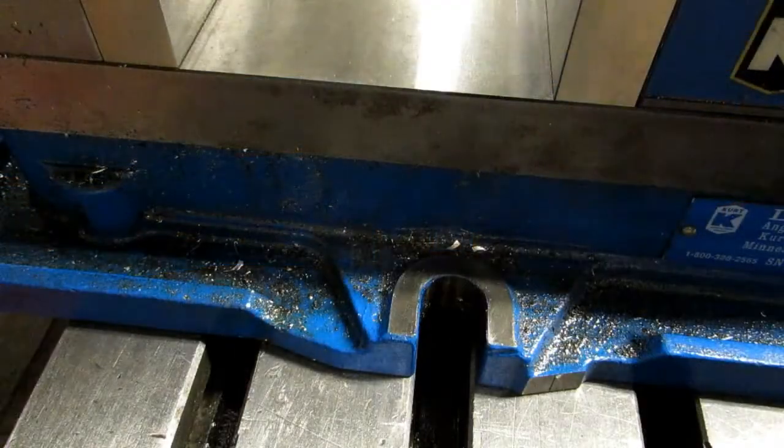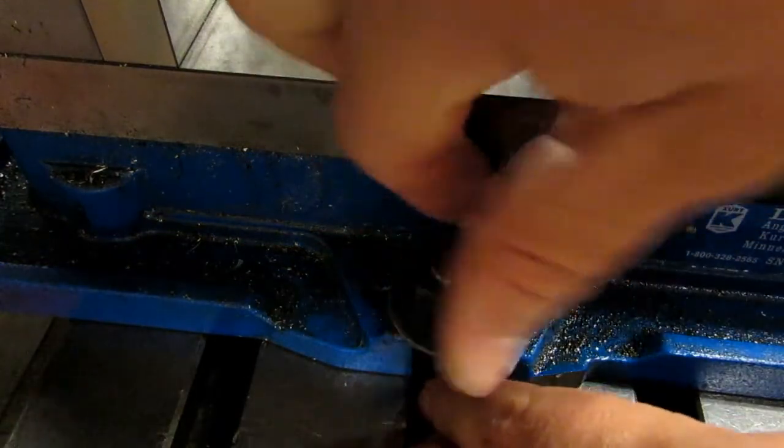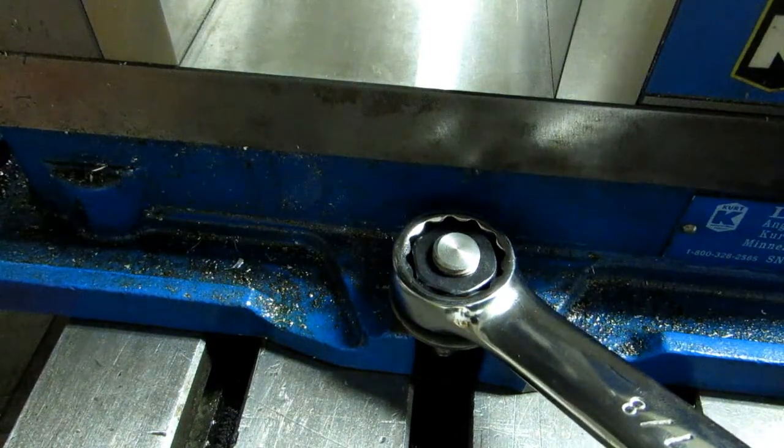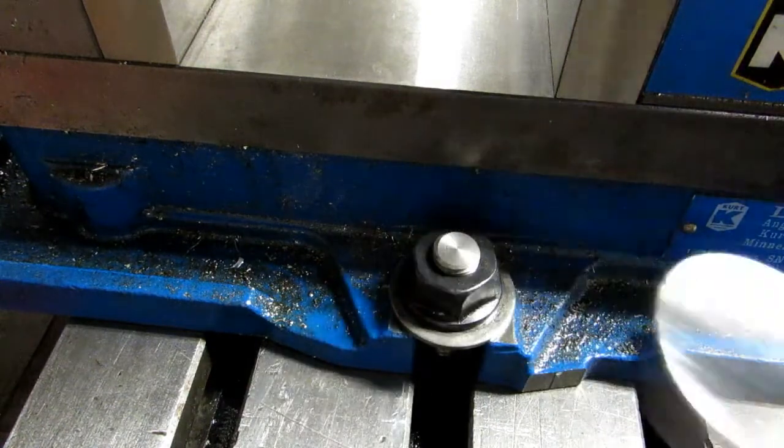So here's the left hand side of the vise. And again, I'm just going to put that in there. And I'm going to make this one about half as tight as the other one. I want it snug so that everything doesn't move too much when I tighten it up the rest of the way.